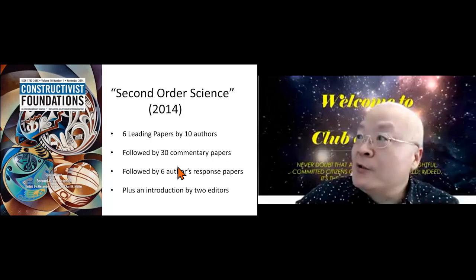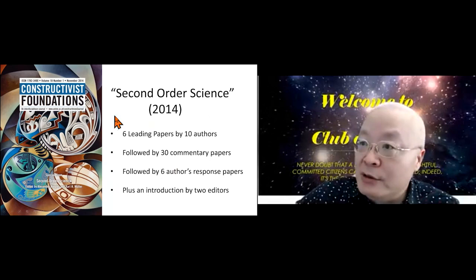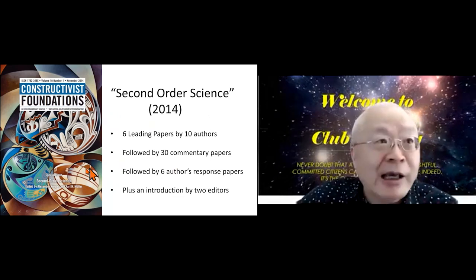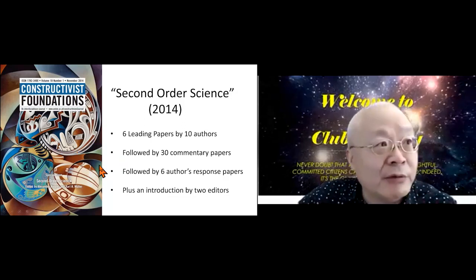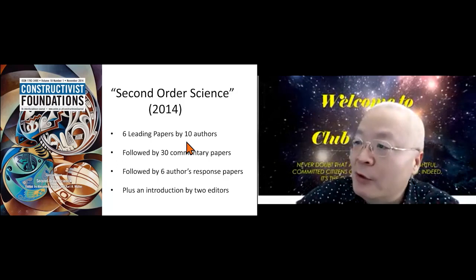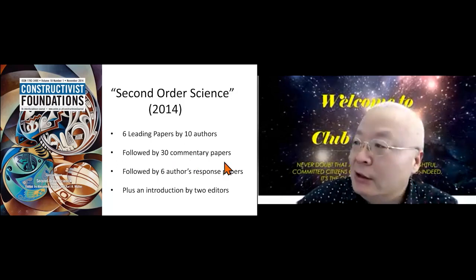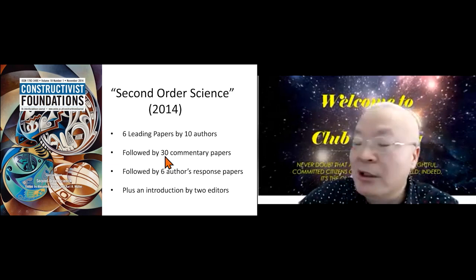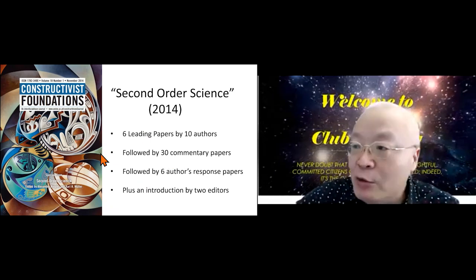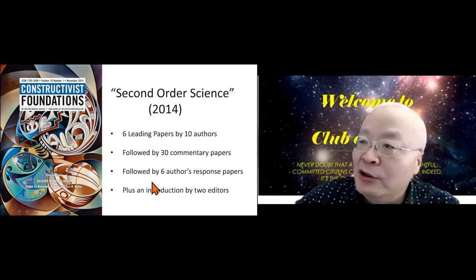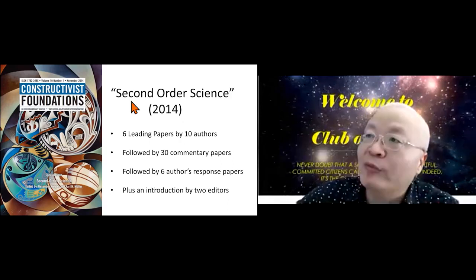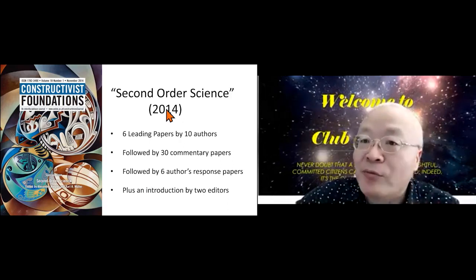Second-order science is symbolically published in this journal. You all know that actually it's the reason to bring this group together. Six leading papers, 10 authors, 30 commentary papers. I'm here, one of them. But since I'm involved in this project, I kept thinking questions. Perhaps I think we can have some better term than second-order.